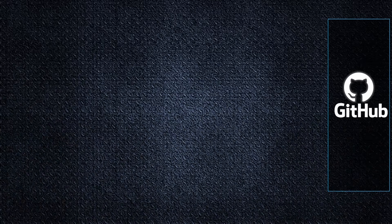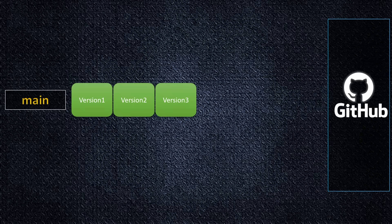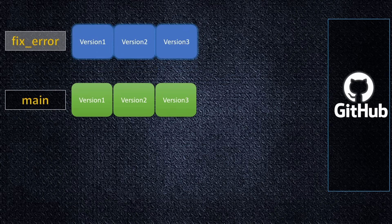We have our repository on GitHub, and we're basically cloning the main repository, which already has three commits. Locally, I'm creating a branch called FixError. It automatically clones all the commits from main.